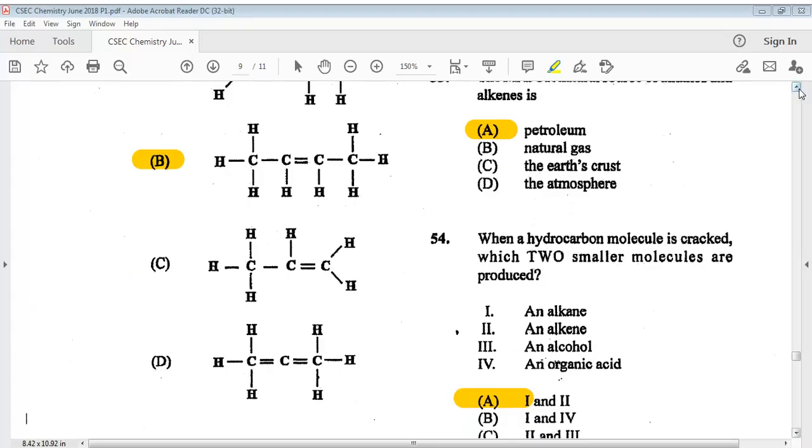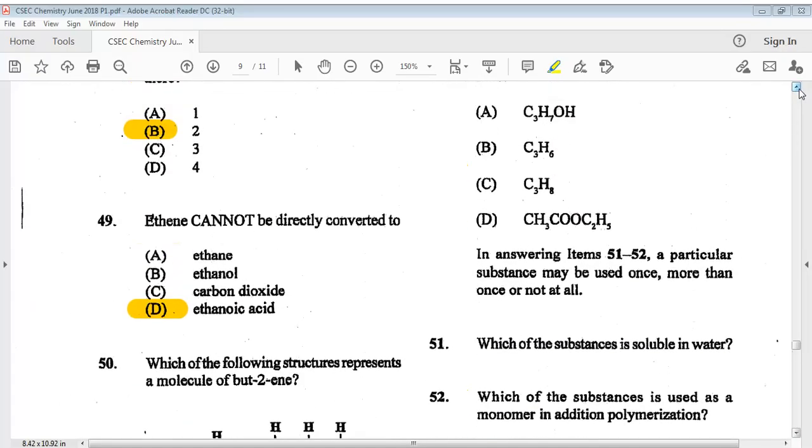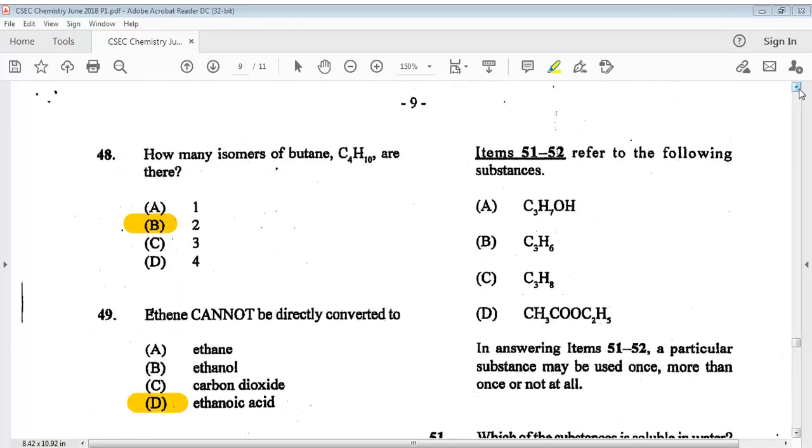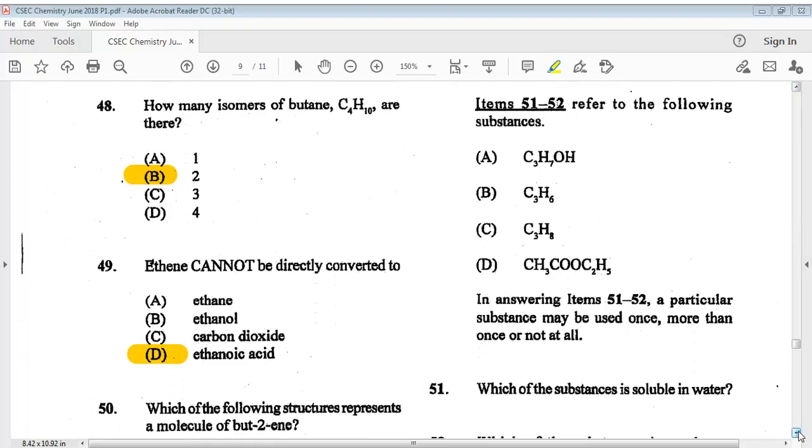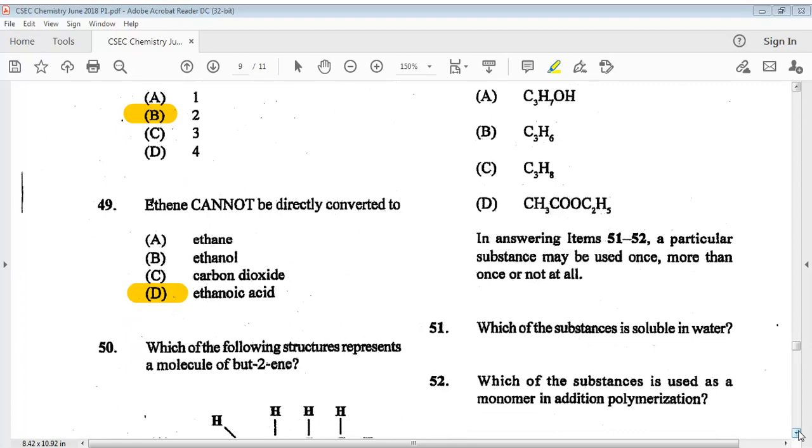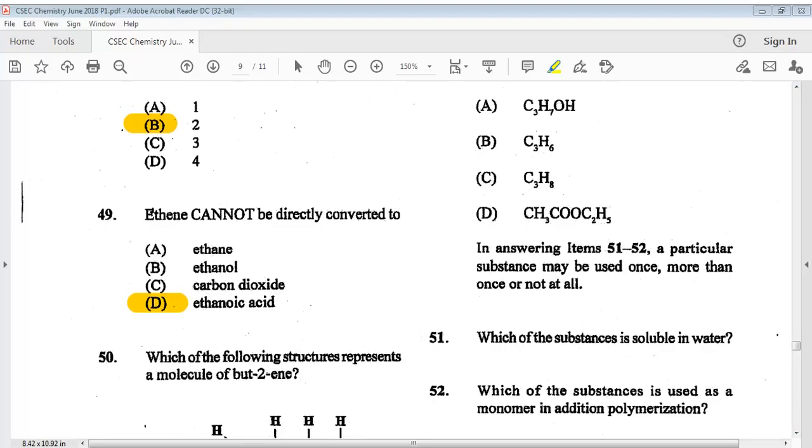Let's go over to number fifty-one. Items fifty-one to fifty-two refer to the following substances. In answering items fifty-one to fifty-two, a particular substance may be used once, more than once, or not at all. Question fifty-one: which of the substances is soluble in water? The answer is A. Question fifty-two: which of the substances is used as a monomer in addition polymerization? The answer for fifty-two is B.